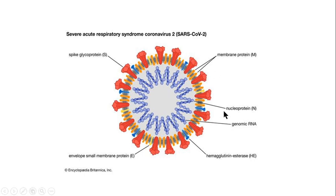This is the general structure of COVID-19. The spike proteins look like a crown, which is why they are called coronaviruses. These spike proteins are very important when discussing the interaction of the virus with human target cells — specifically the lung cells.